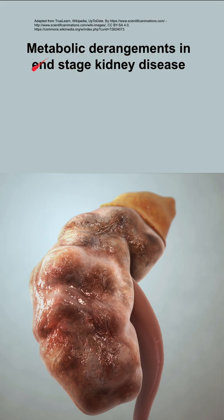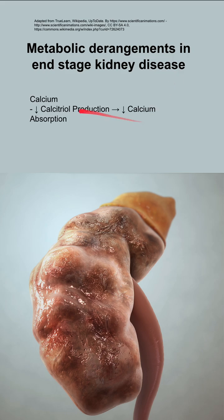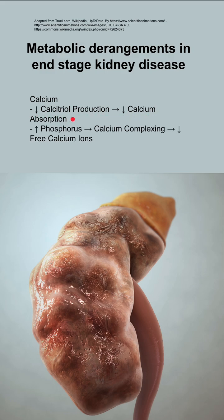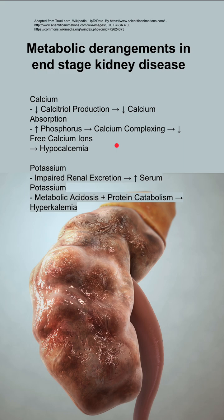These are metabolic derangements in end-stage kidney disease, as well as some proposed mechanisms. Starting with calcium: in end-stage kidney disease, you have decreased calcitriol production, which leads to decreased calcium absorption. You also have increased phosphorus, which leads to calcium complexing, further decreasing your free calcium ions. Both of these result in hypocalcemia.